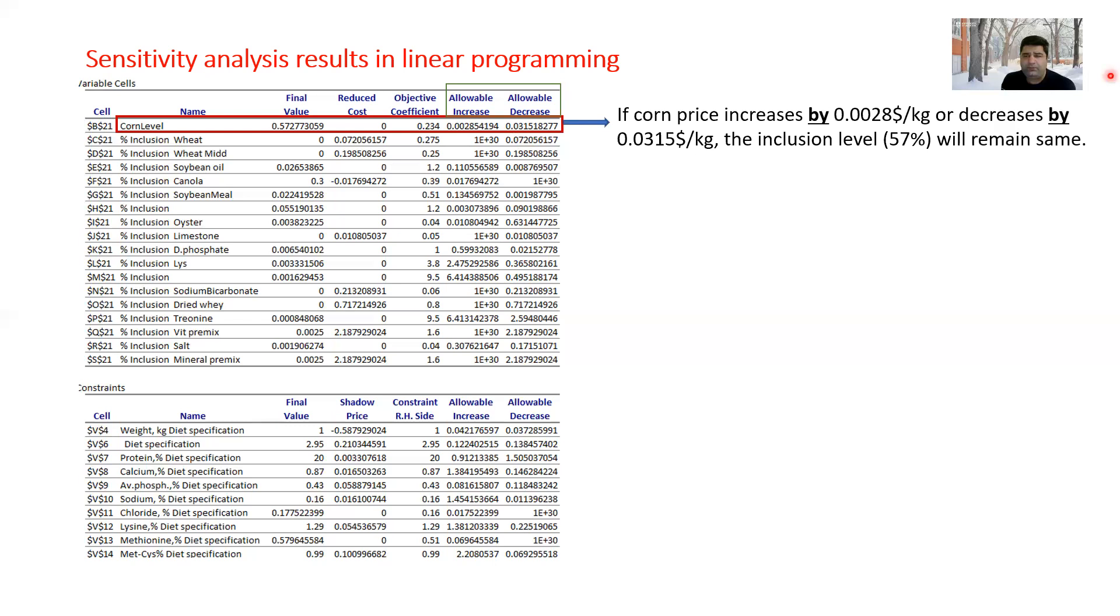It means that if corn price, which means that objective coefficient 0.234 dollar per kilogram was corn price. If corn price increases by the amount shown in allowable increase or decreases by the amount shown in allowable decrease, then its inclusion rate in the diet, which was 57 percent, will remain the same.